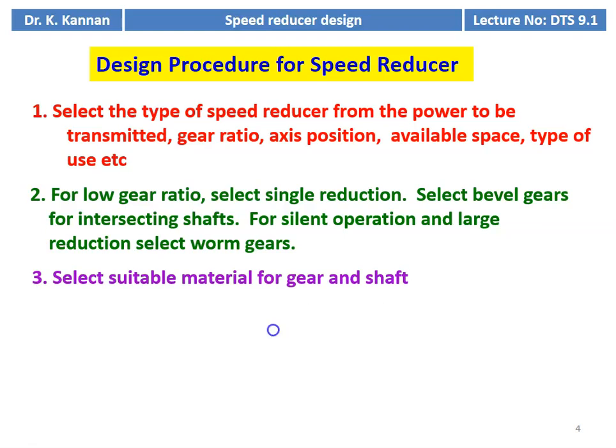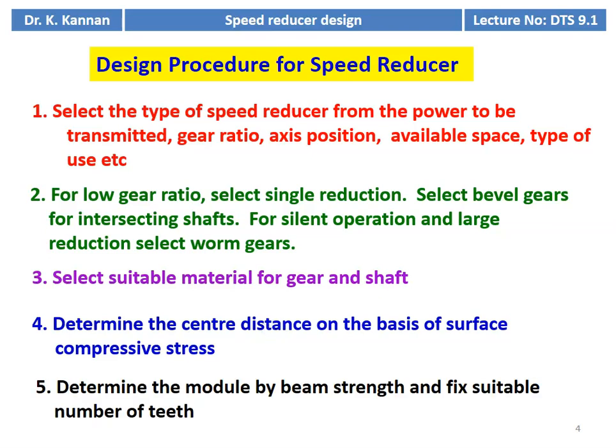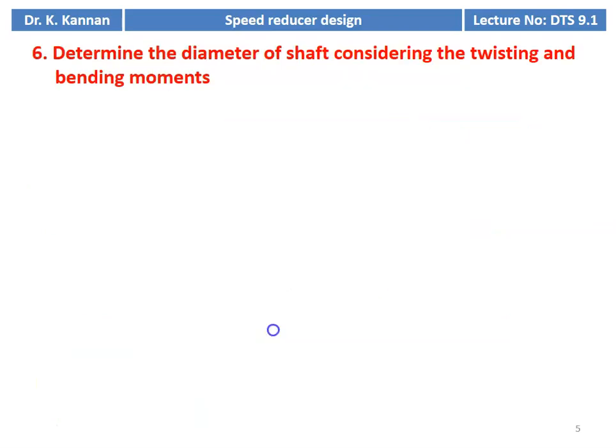Select suitable material for the gear and the shaft. Determine the center distance on the basis of surface compressive stress — all these points were discussed earlier in gear design, where we calculated surface stress, center distance, module, and all design parameters including bending stress. Determine the module by beam strength and fix the suitable number of teeth. Then determine the diameter of the shaft, considering the twisting moment and the bending moment. Once the gear design is over, we have to design the shaft — the shaft design you studied in the fifth semester.